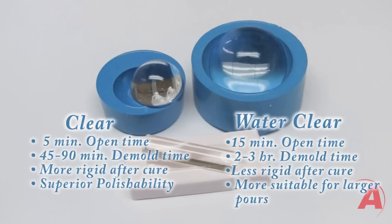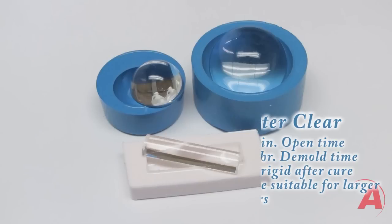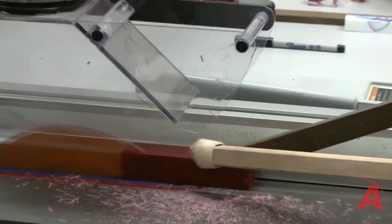Water Clear has a 15 minute open time and a demold time of about two to three hours. This system is ideal when you have a larger mold or a larger casting and need some extra time. In their cured state, both of these systems can be sanded, tap drilled, or polished.